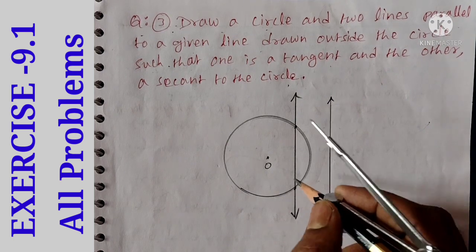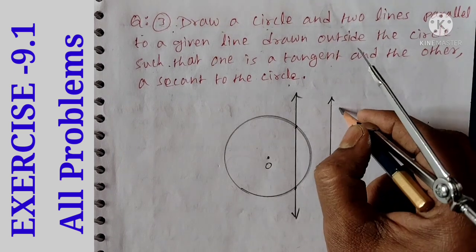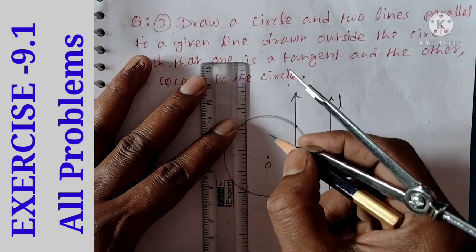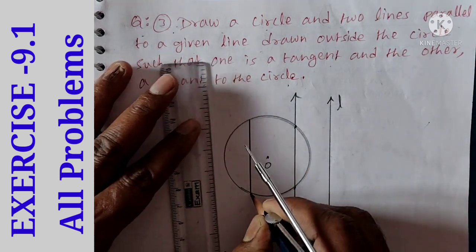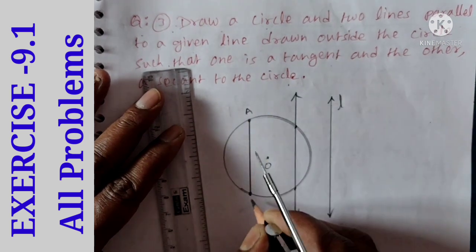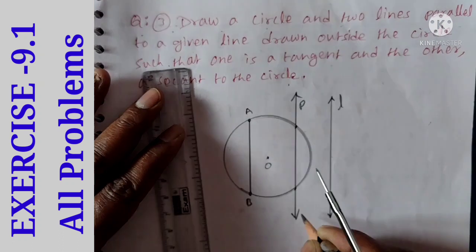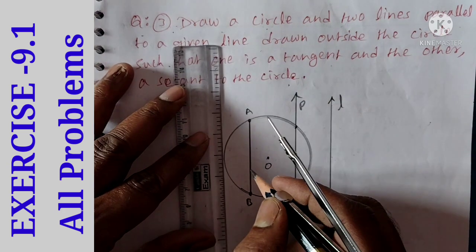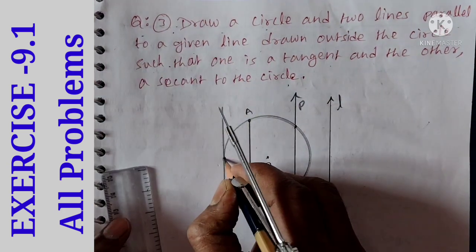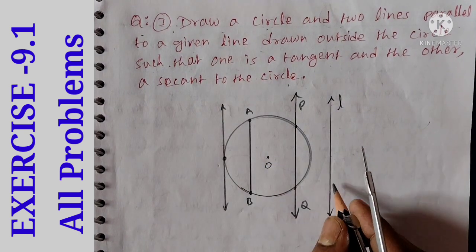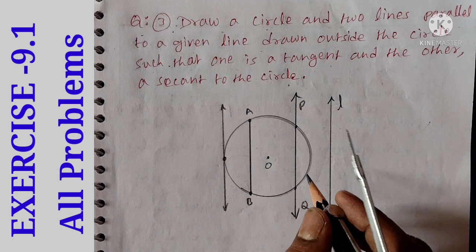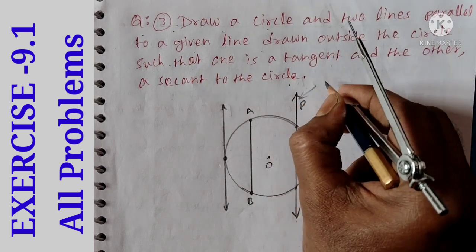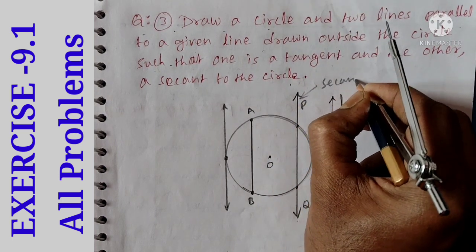Two points intersect at the circle. Here is the line L. Parallel to it, draw another line to the circle. This line intersects two points — at points A and B. Line PQ. If we draw a parallel line, this line will touch at one point. Then we draw three lines. Line E is the secant.